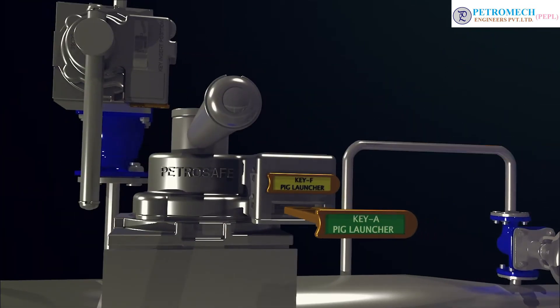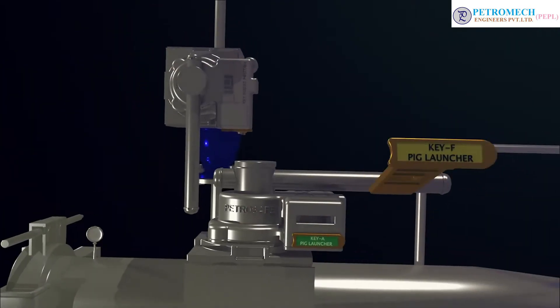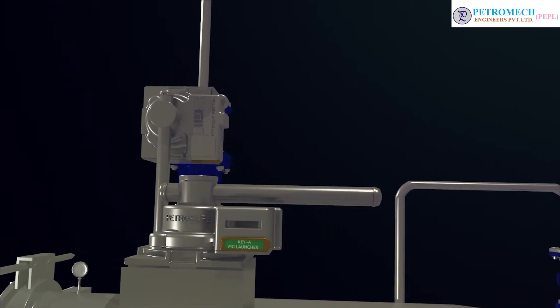Open the valve and release key F and gradually fill the pig launcher till the pressure in the pig launcher equals to pressure in the pipeline.